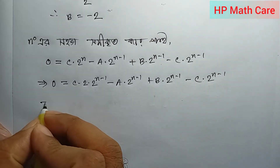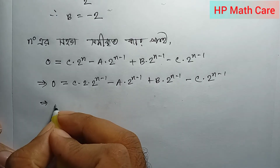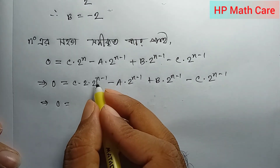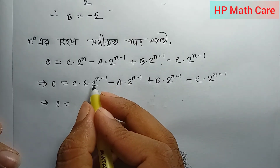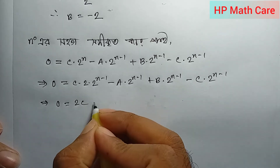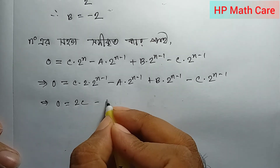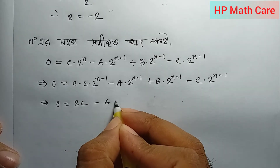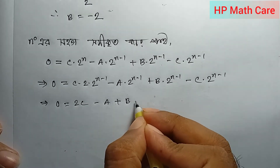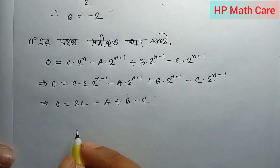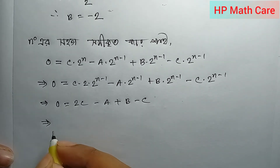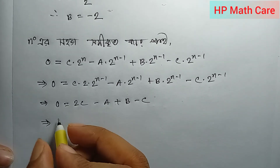Now let's see — we can add 2 power n minus 1. So we can add 2 power n minus 1, plus 1 power n minus 1, continuing the pattern of n minus 1 terms.